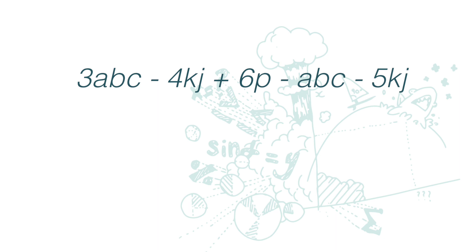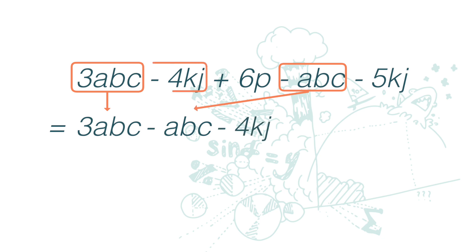To simplify this one, first we group all the like terms together. So we will rewrite them as 3abc minus abc minus 4kj minus 5kj plus 6p. Now this makes things become very clear. We will add up or subtract the like terms.